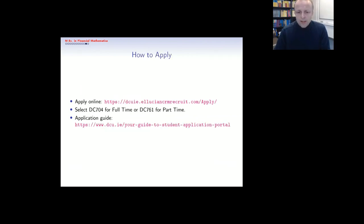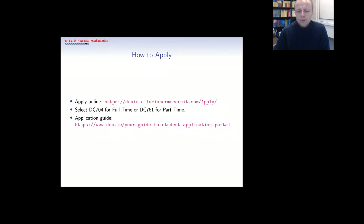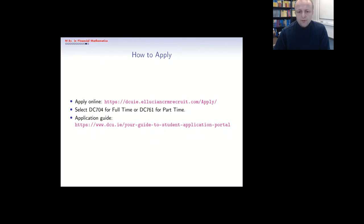If you would like to apply, the link is on the slide — the same link used for other DCU programs. The codes to use are DC704 for the full-time program and DC761 for the part-time program. An application guide link is also provided. If you have any questions, send me an email — you can find my contact details by googling my name or visiting the DCU website. I'm happy to answer any questions you may have.